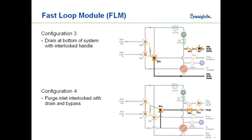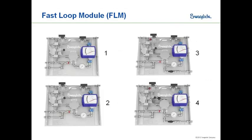There are four options for the fast loop module, plus the quarter-inch and half-inch versions. The options were designed by starting with the most complex configuration and removing parts to create simpler versions. All options are standardized and independent — you choose which ones you want and specify them by part number.